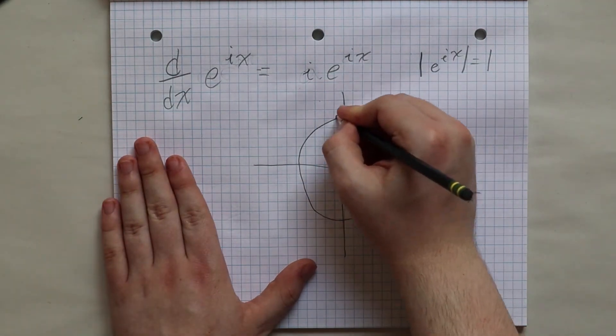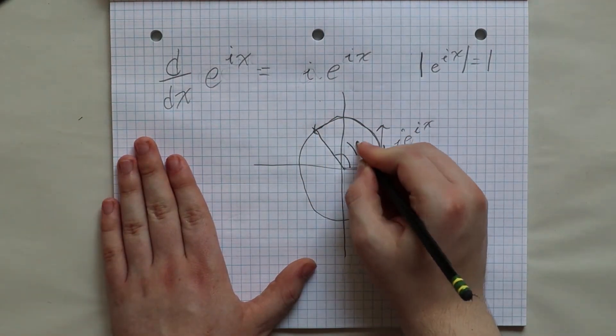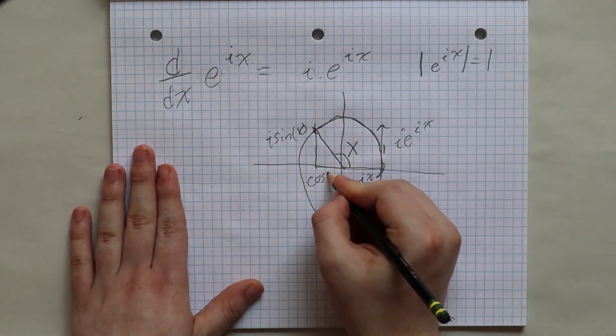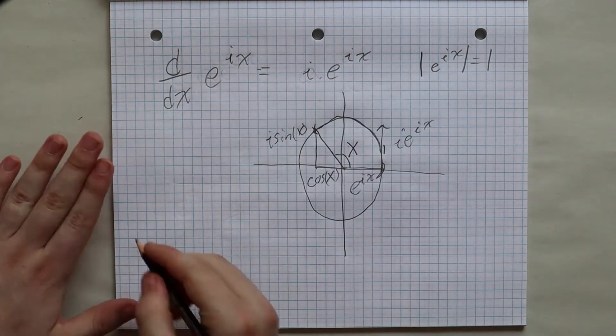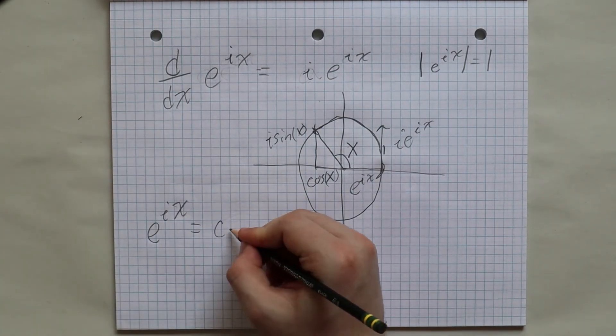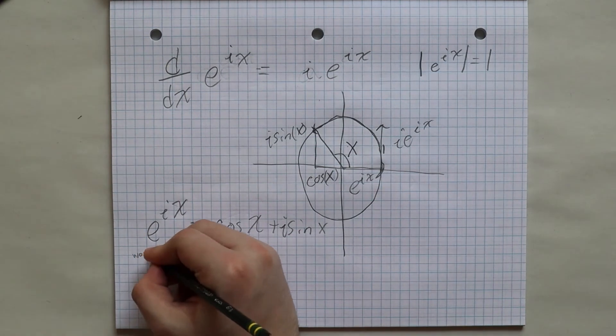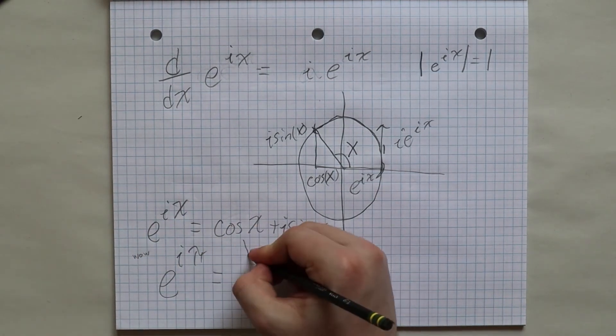So this says that e to the power of i x is equal to the complex number that is x radians around this circle. Or more formally, e to the i x is equal to cosine of x plus i times sine of x. This is actually Euler's identity and is actually why e to the power of i pi is equal to negative 1.